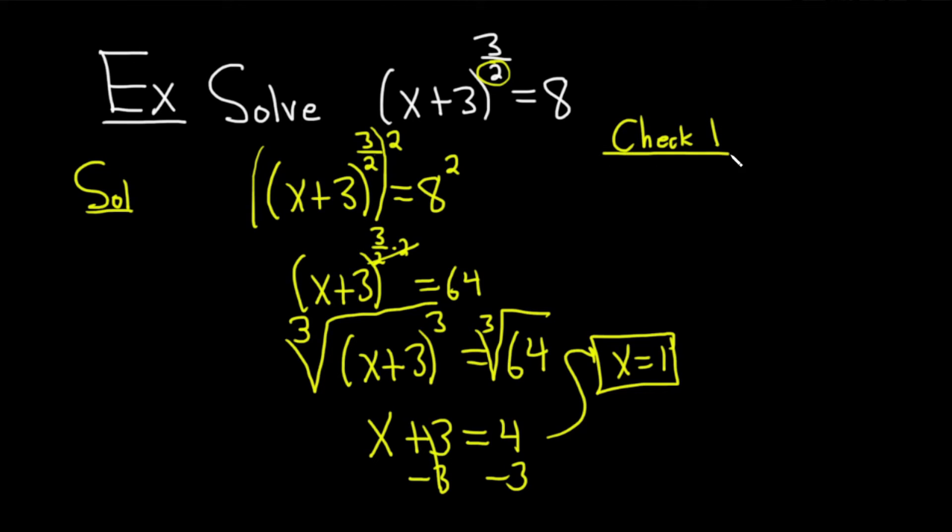Check your answer. You go back to the original question. So instead of x plus 3, it'll be 1 plus 3. And it's to the 3 halves. And we want this to be equal to 8. So 1 plus 3 is 4. And that's to the 3 halves. And we want this to be equal to 8. So now we're going to use some techniques. So this 2 here turns this into a square root. And the 4 goes on the inside. And you put the 3 on the outside. And this should be equal to 8. And so 2 cubed is equal to 8. So it checks.